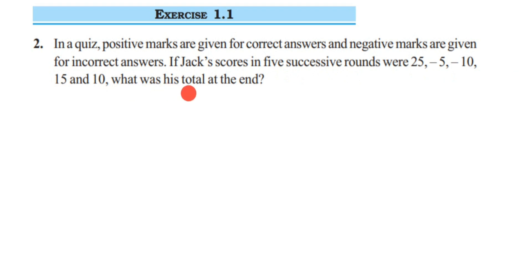So they're asking us to find out the total marks at the end. They have given Jack's scores in five successive rounds, meaning one after the other. He got different scores and we have to find out the total. Total means we have to add all the scores and get the answer.